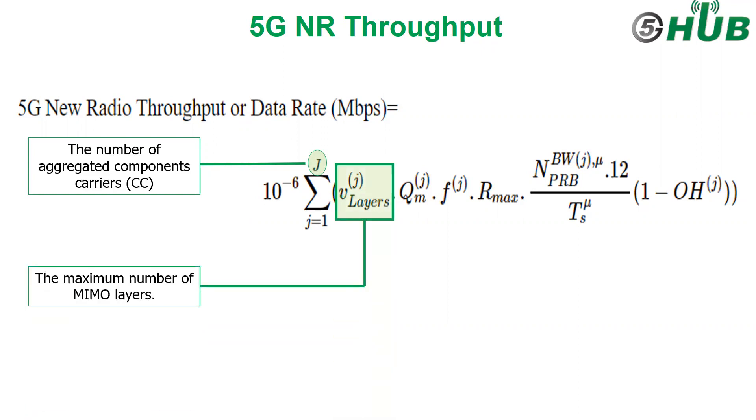v^J_layers represents the maximum number of MIMO layers. In MIMO, the number of layers is very similar to the term stream, and the layers number can be more than the antenna numbers. The maximum value for this term is 8 in downlink and 4 in uplink.